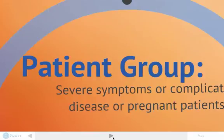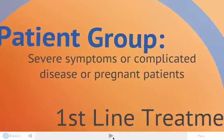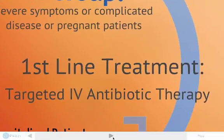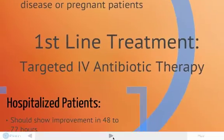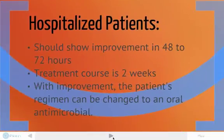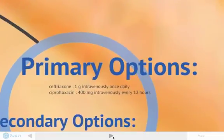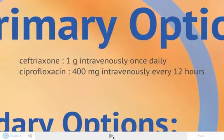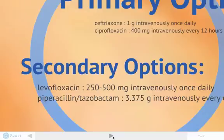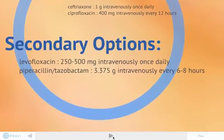For the acute patient with severe symptoms, complicated disease, or who is pregnant, the first-line treatment is targeted IV antibiotic therapy. Patients hospitalized with these severe symptoms should show improvement in 48 to 72 hours, with a treatment course of about two weeks. With improvement, the regimen can be changed to oral antimicrobial therapy. Primary options are ceftriaxone 1 g intravenously once daily, and ciprofloxacin 400 mg intravenously every 12 hours. Secondary options are levofloxacin and piperacillin-tazobactam.